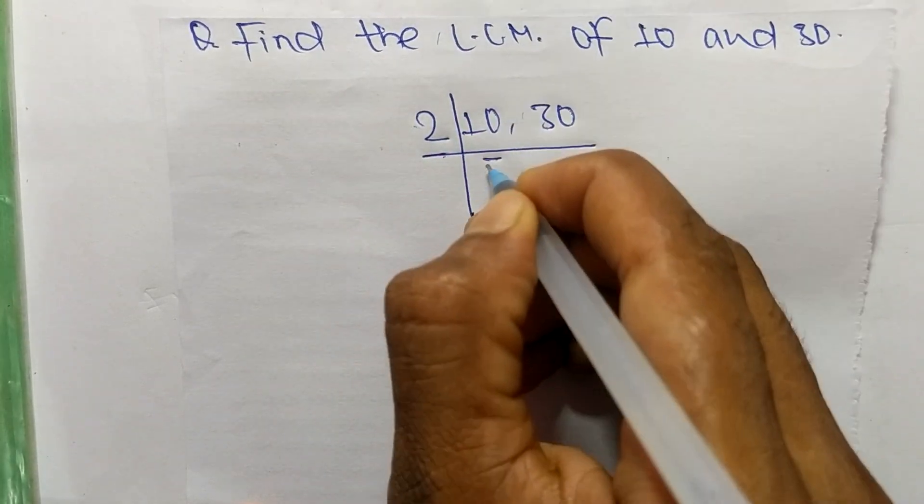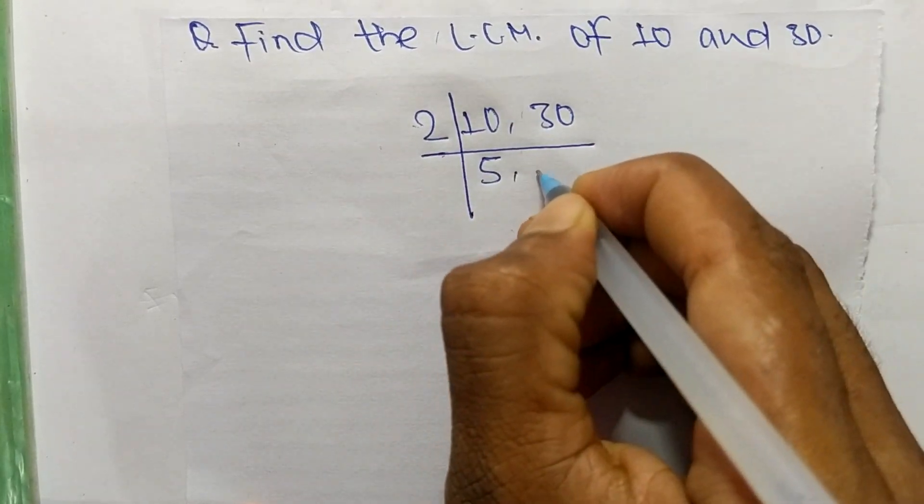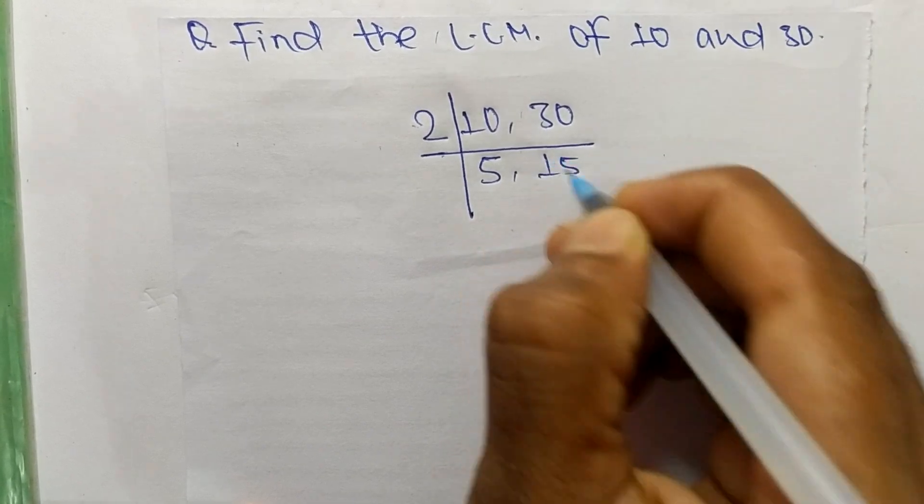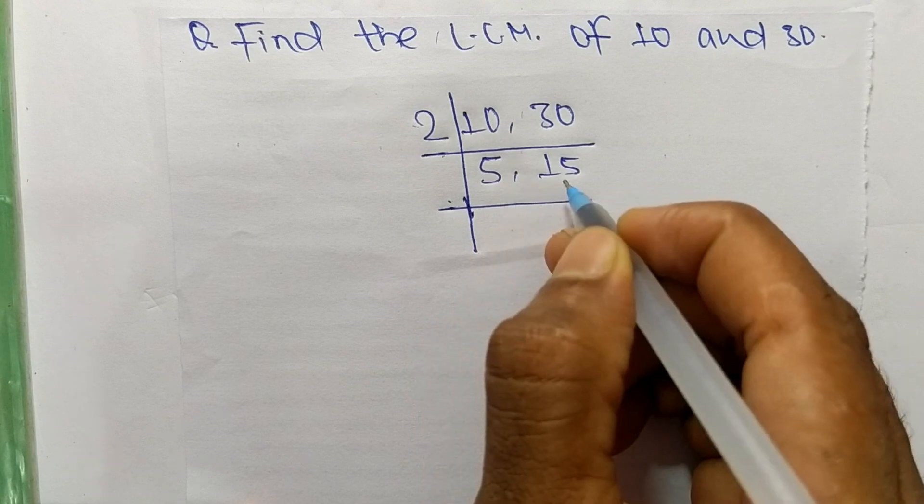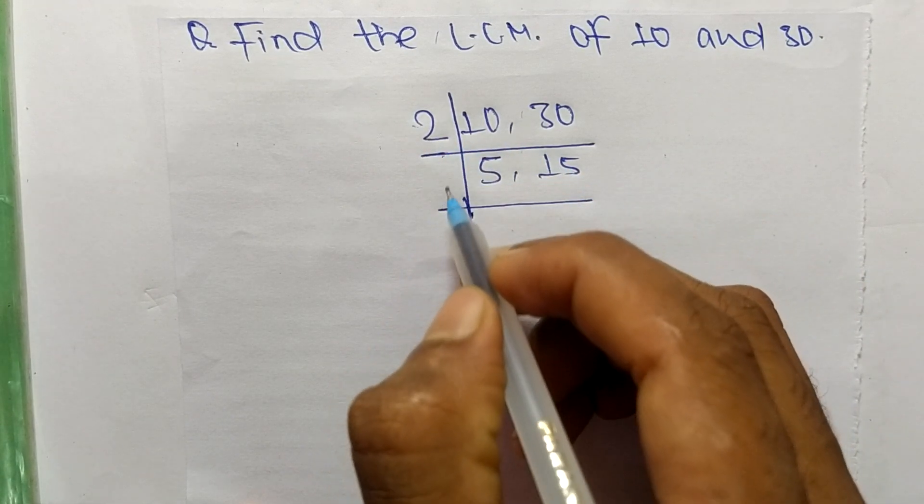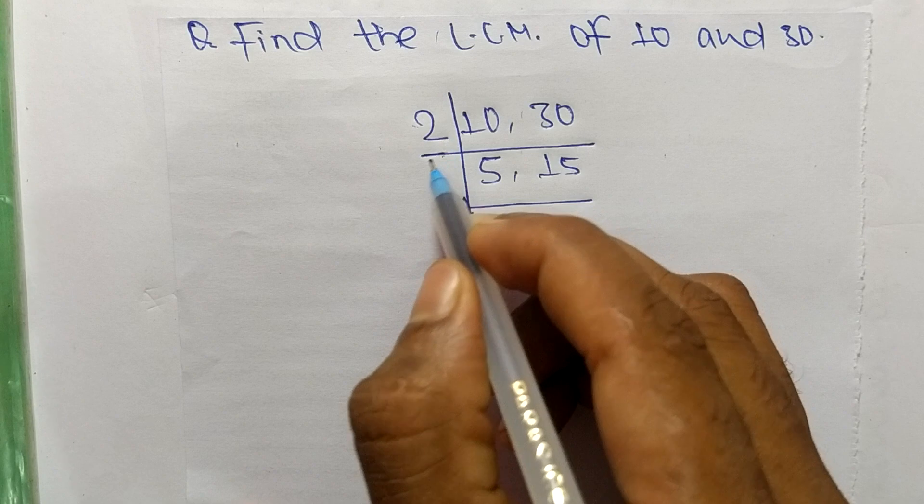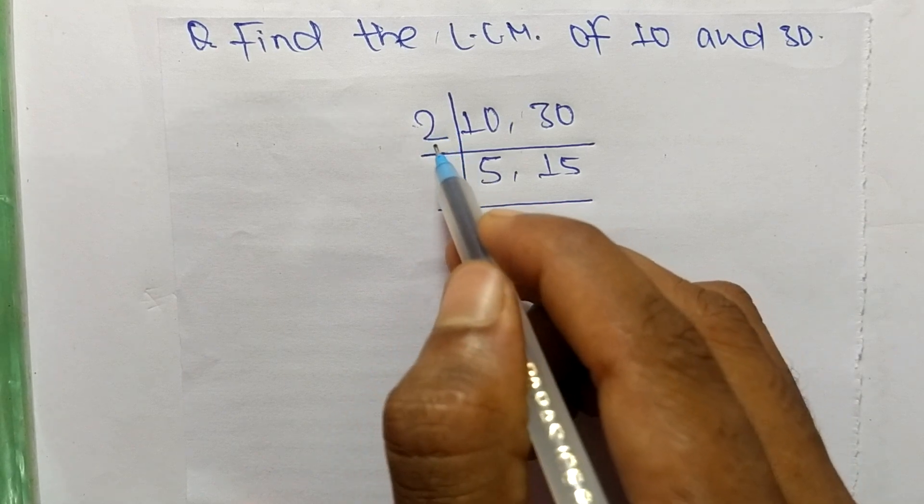So 2 times 5 means 10 and 2 times 15 means 30. So now we get here 5 and 15, which are not exactly divided by 2. So we choose the slightly greater number than 2 which can exactly divide 5 and 15.